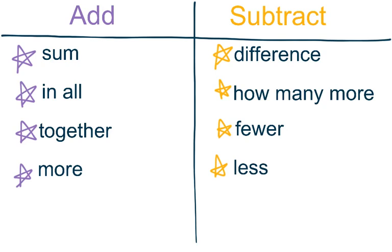Before we get started on actually solving equations, let's remember some important words that might help us decide if we are adding or subtracting. So if we look at our adding column, we'll see that some words to help us are sum, in all, together, and more. On our subtracting side, we will see difference, how many more, fewer, and less. Remember, this does not mean that every single time you see these words that you will add or subtract. You do need to understand exactly what the question is asking.